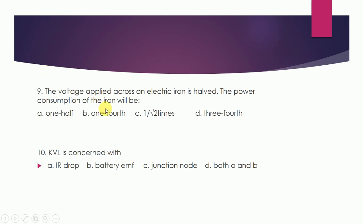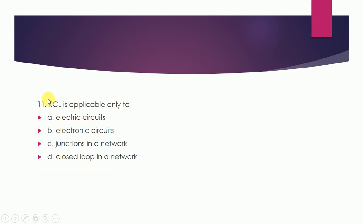The voltage applied across an electric iron is halved. The power consumption of the iron will be: 1/2, 1/4, 1 by root 2 times, or 3/4? Correct answer is B — 1/4. KVL is concerned with: IR drops, battery EMF, junction node, or both A and B? Correct answer is C — junction node. KCL is applicable only to: electric circuit, electronic circuit, junction in a network, or closed loop in a network? Correct answer is C — junctions in a network.